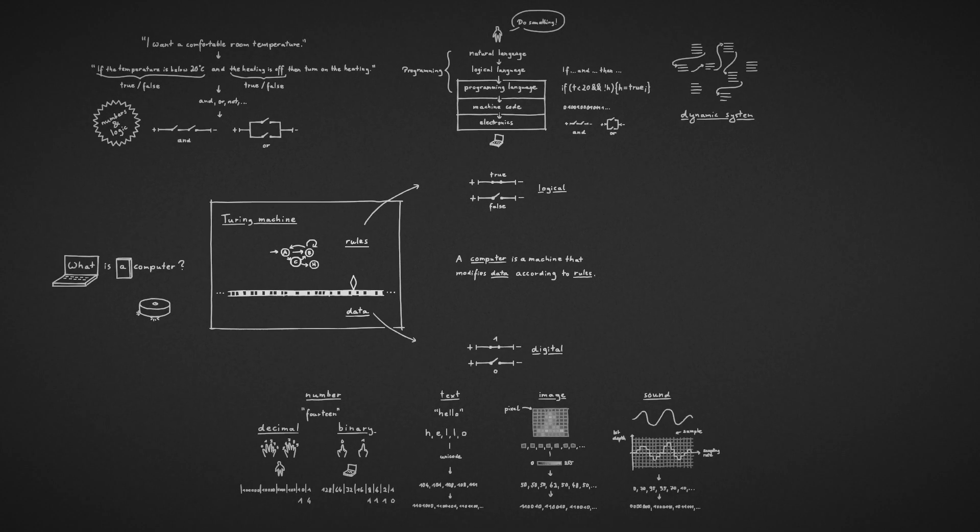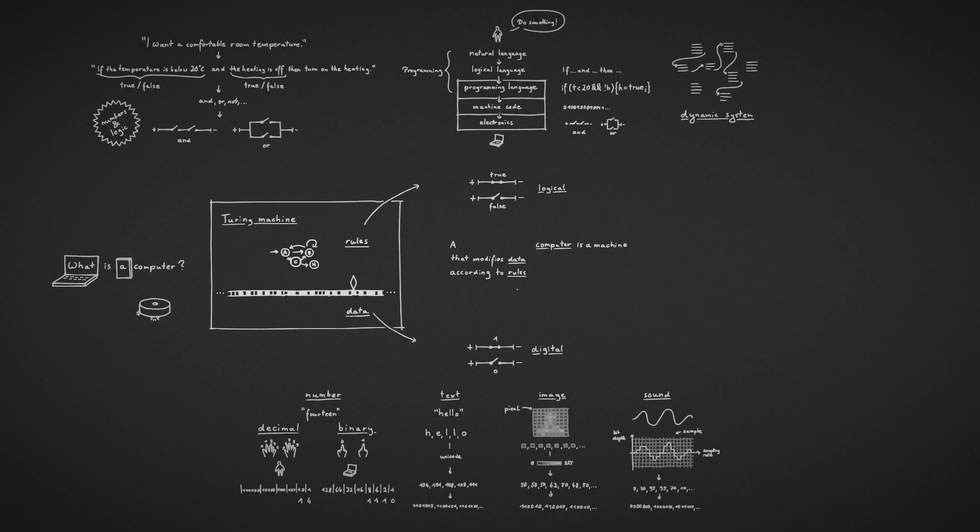Okay, finally we know what a computer is. A digital electronic computer is a machine that modifies data expressed in numbers according to rules based on values of true and false.